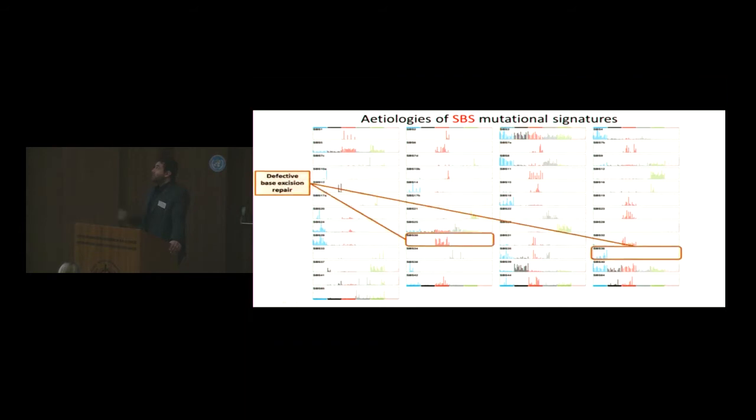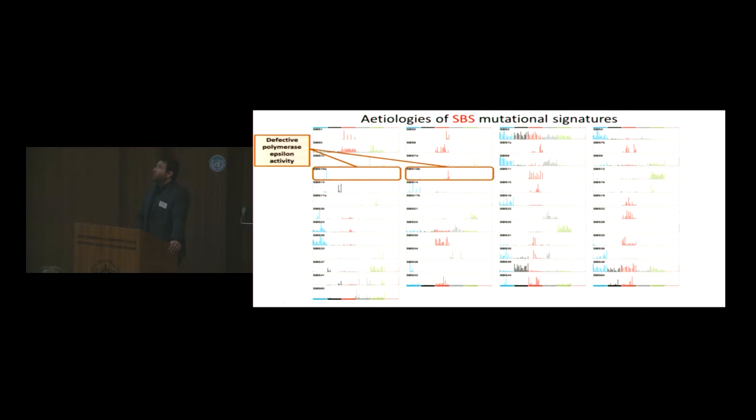Defective base excision repair, if you have a MUTYH mutation, you get signature 36. If you get NTHL1 mutations, you get signature 30. Defective polymerase Epsilon, signatures 10A and 10B. Putatively assigned signature 9 to the infidelity of polymerase ETA activity. AID is signature 84. And then APOBEC, the most prevalent mutagens in human cancer, at least in adulthood human cancer. They have two signatures, signature 2 and signature 13.